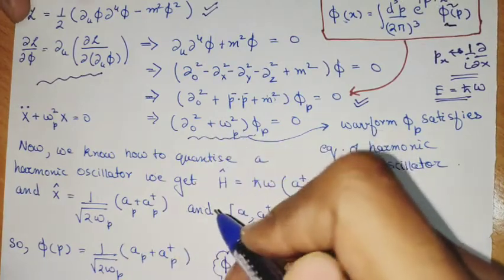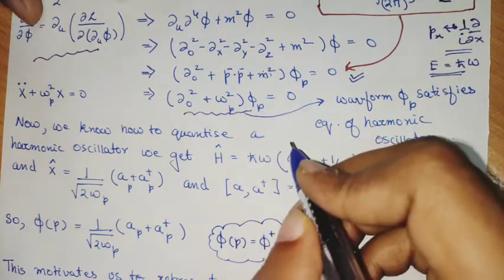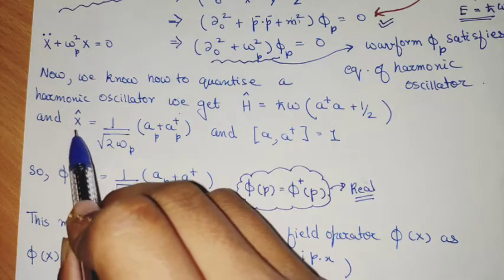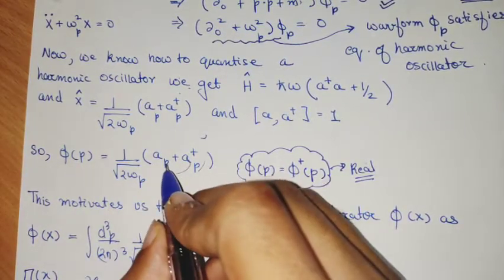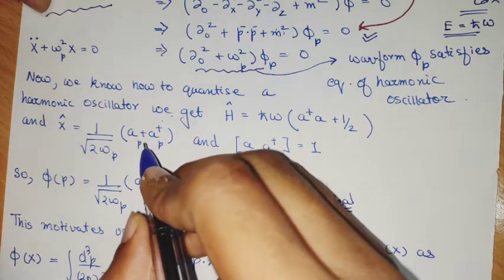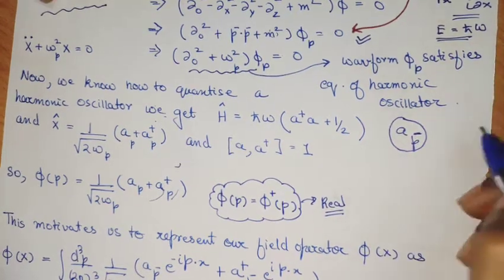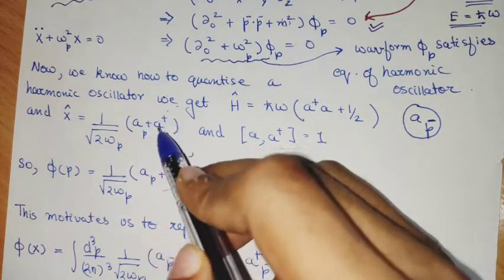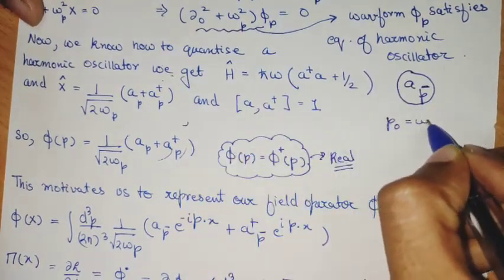Once we introduce ω_p, we see that if we put φ in as a position variable x, the entire equation is the same as the harmonic oscillator equation. Once we see it satisfies the harmonic oscillator equation, we say φ(p) has the solution of the harmonic oscillator position operator. We extract, from our understanding of the harmonic oscillator, what the position operator looks like, and we give φ(p) the same form in terms of a and a†. This p is from the relation that ω is dependent on momenta. p_0 is ω and x_0 is t.